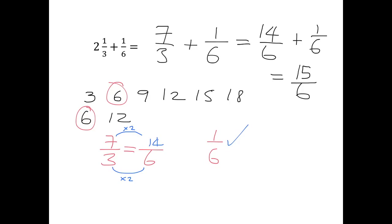So 7 thirds plus 1 sixth is the same as 14 sixths plus 1 sixth, giving 15 sixths. I simplify by dividing top and bottom by 3, and get my answer of 5 over 2.